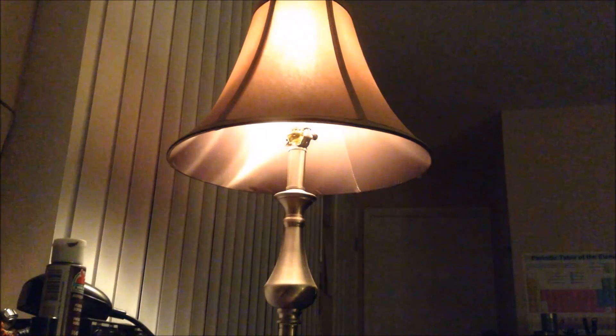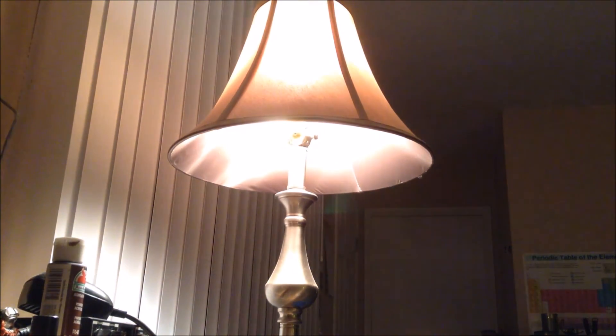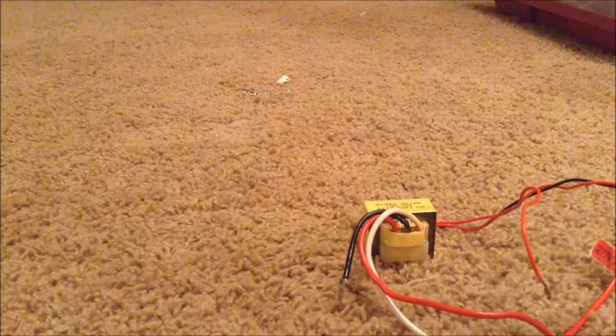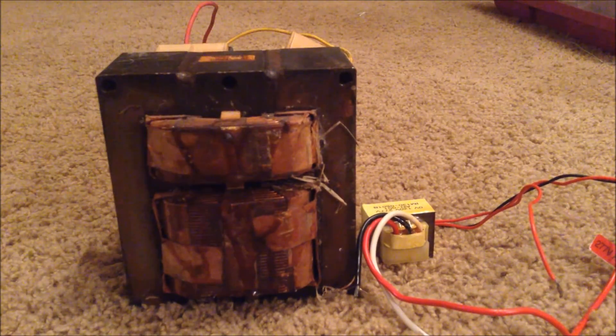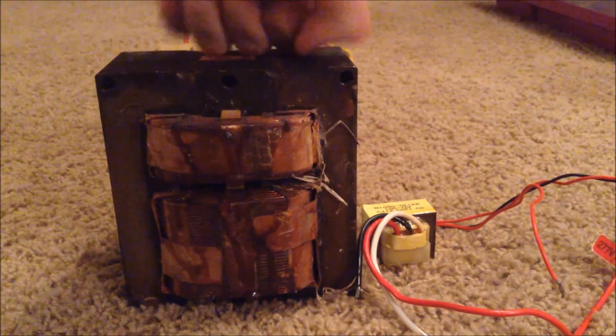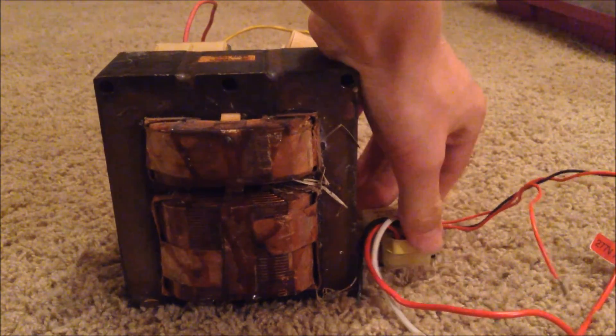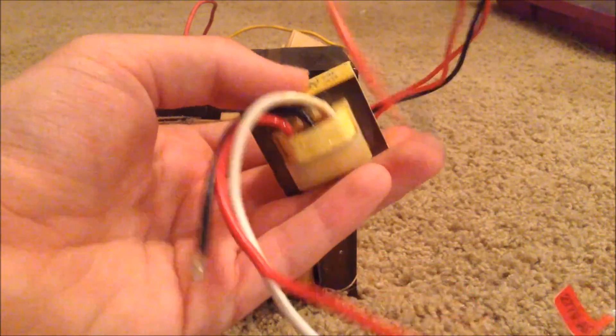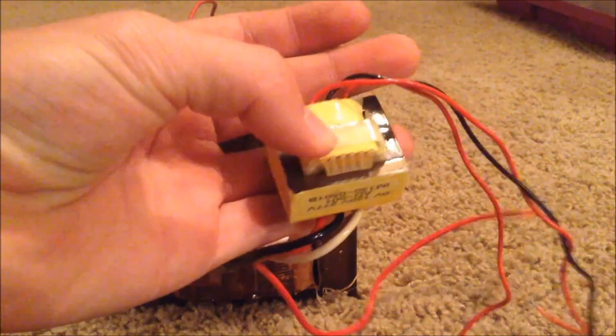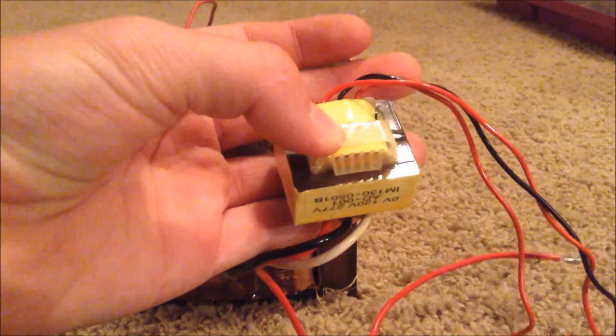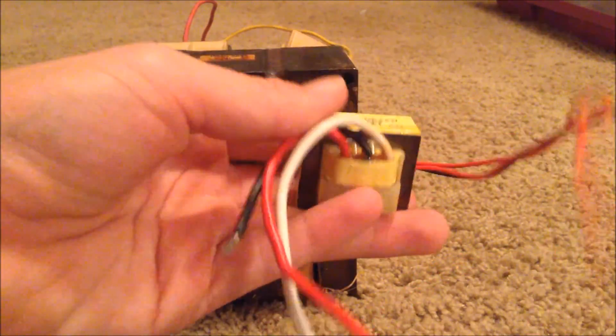The light gets brighter. And autotransformers don't always have to be variacs. They can be anything from as small as this little transformer to the size of this transformer, which comes from a street light. This transformer and this transformer are both autotransformers. In my next video, I'll be showing you why this little transformer is probably the most useful and coolest transformer that I have.